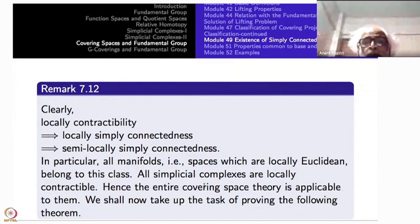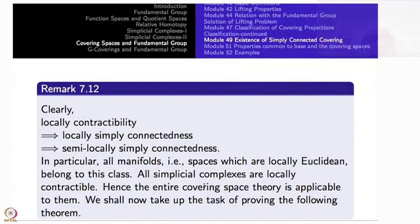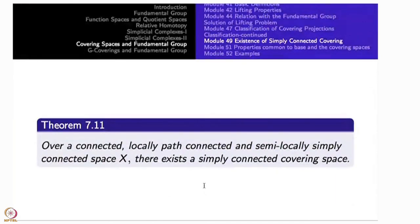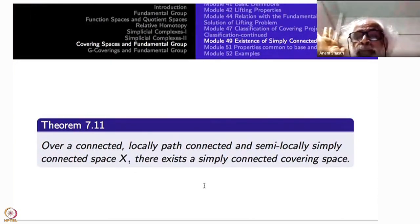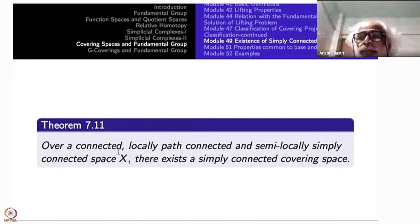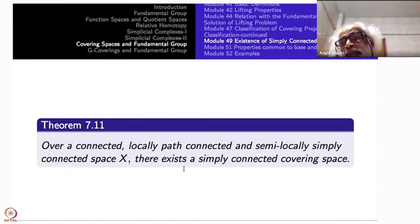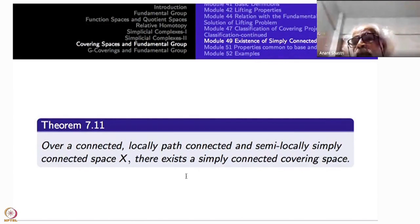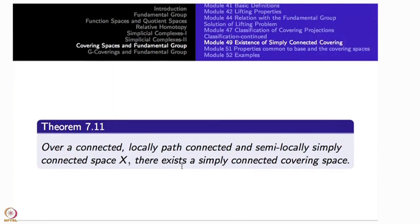The connectivity assumption is optional — if the space is not connected, handle each connected component and put them together to get a simply connected covering for all of them. Local path connectivity and semi-local simple connectivity are not optional. Connectivity is just a simplifying assumption.